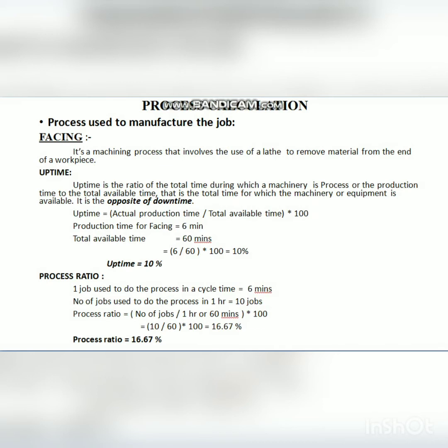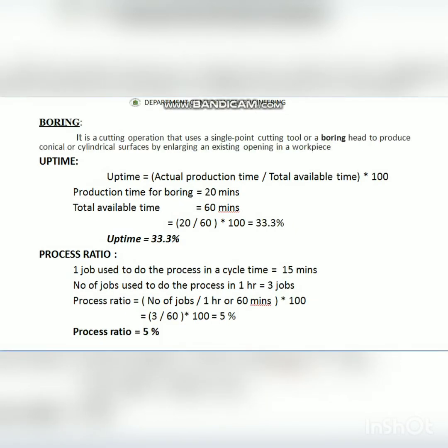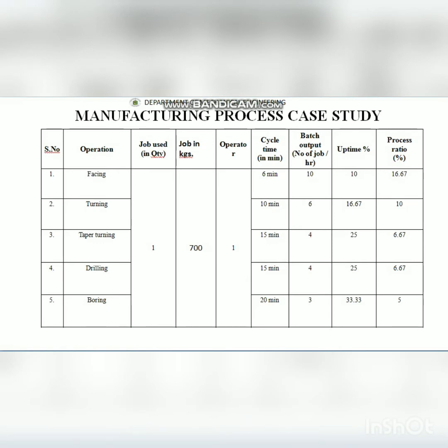Once the manufacturing process is established, we calculate uptime and process ratio for each individual operation. We can take five process operations for manufacturing a particular product: facing, turning, taper turning, drilling, and boring or milling. For each of these five processes, we individually calculate the uptime — actual production time divided by total available time, multiplied by 100 — and also the process ratio per hour.